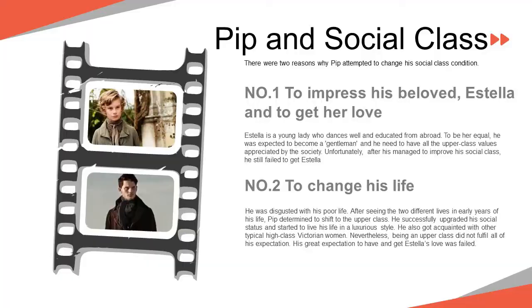Next, we will discuss why Pip wanted to upgrade his social class. There are two reasons. The first is that he wanted to impress his beloved Estella and win her love. Estella is a young lady who danced well and was educated abroad. To be her equal, he was expected to become a gentleman and have all the upper-class values appreciated by society. Unfortunately, after he managed to improve his social class, he still failed to win Estella.